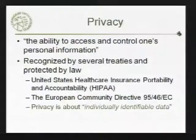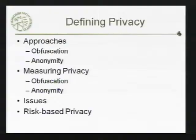One key thing is that privacy is about individually identifiable data — data that is about you and that can be traced to you. But what does it mean for data to be individually identifiable, to be something that can be traced to you? There are a lot of definitions and approaches to protecting privacy. Obfuscation: we alter data or add noise to data so it's private because it's not the real data anymore. Anonymity: removing identity from the data. The key is how do we measure these things — have we sufficiently obscured the sensitive information or sufficiently anonymized the data?